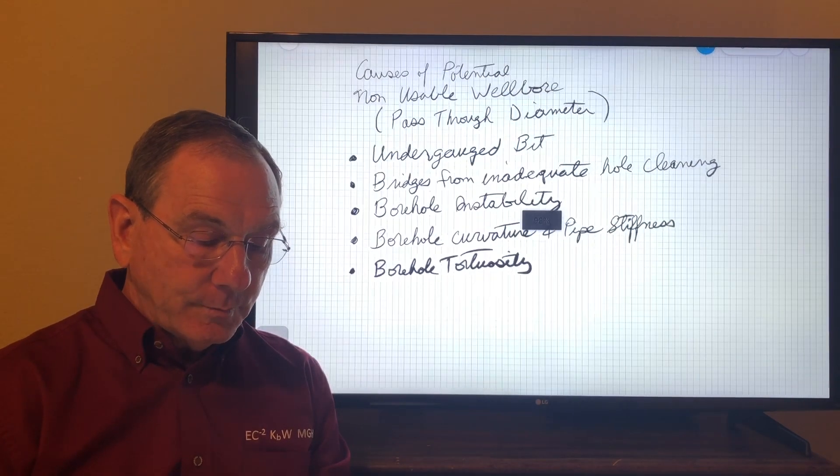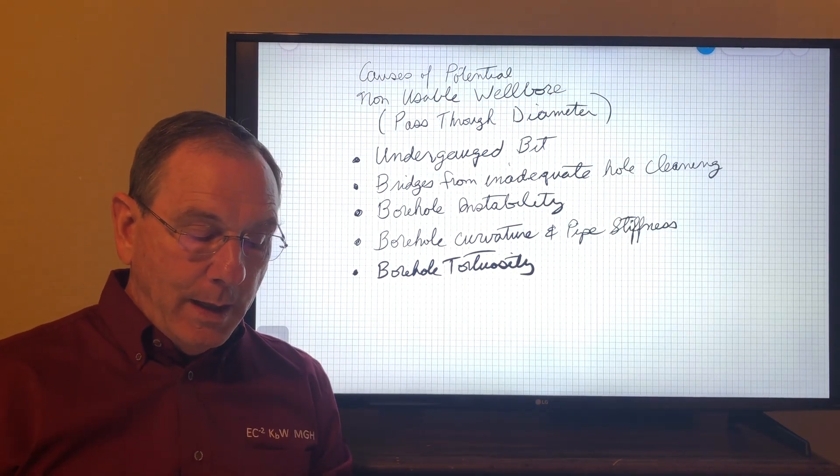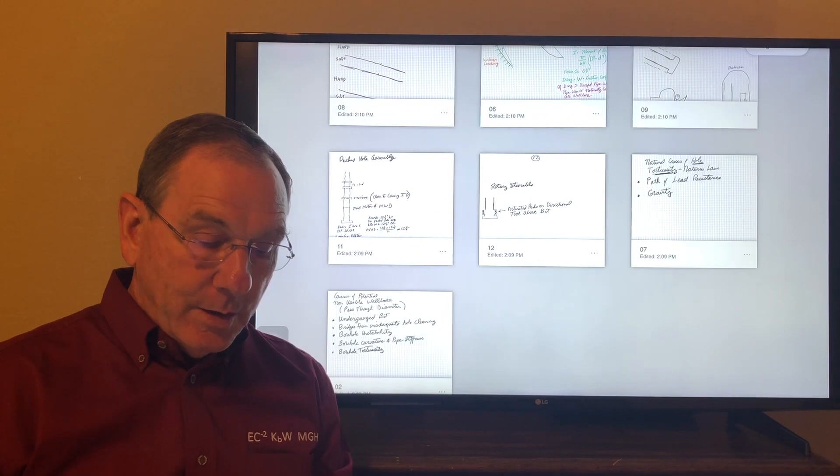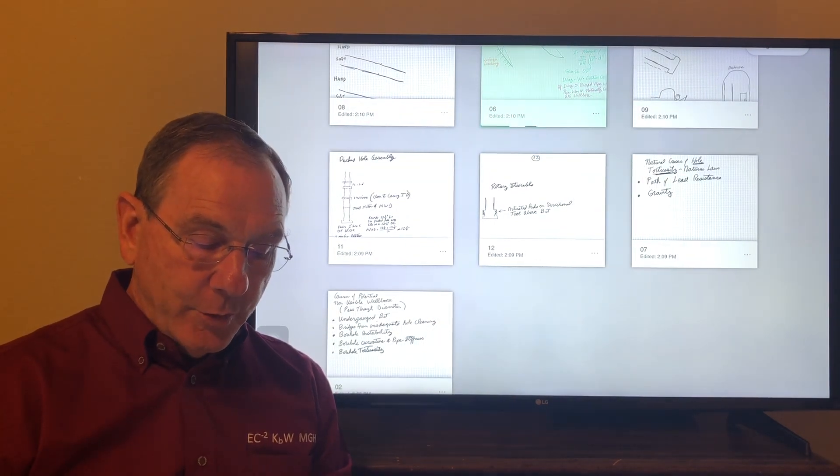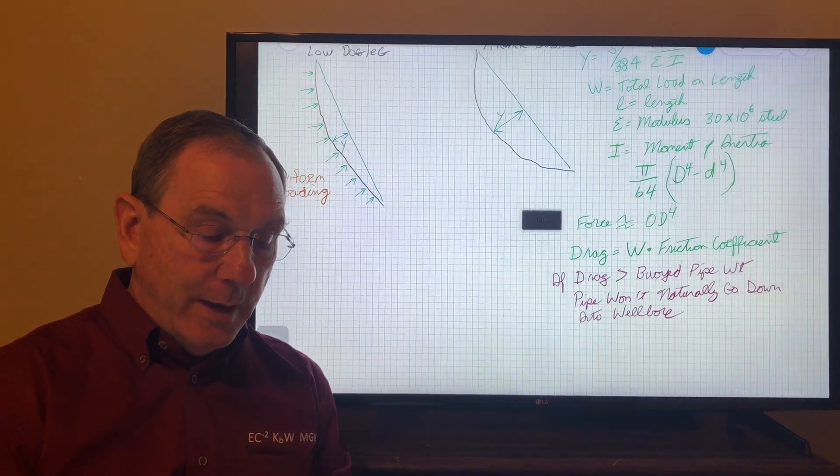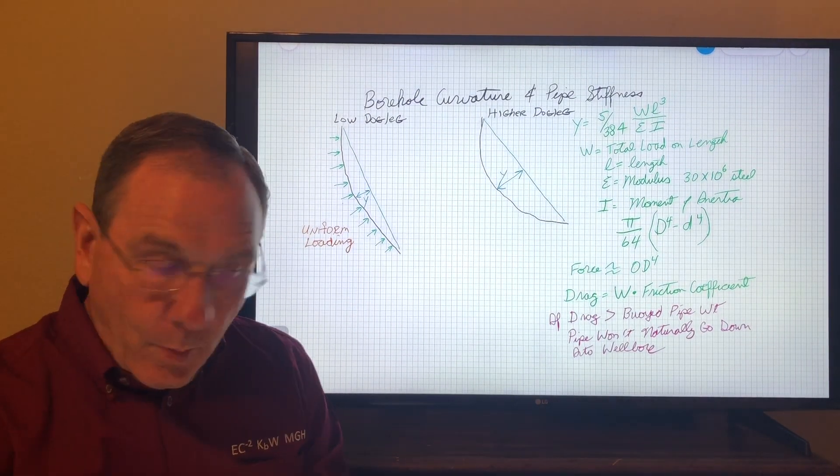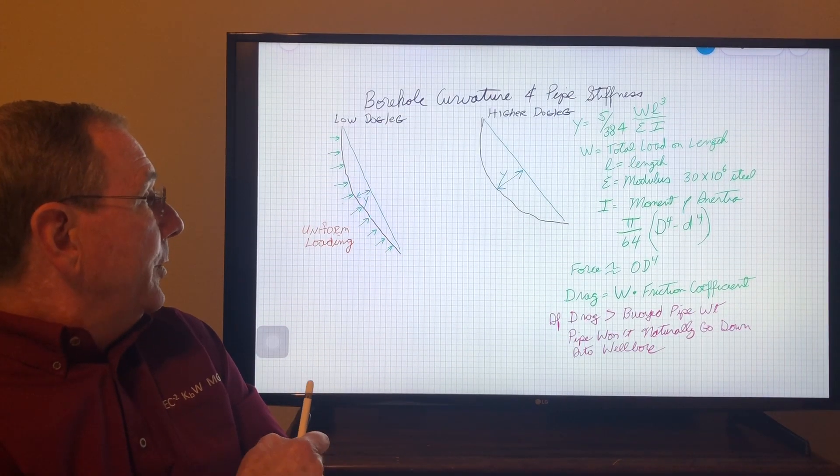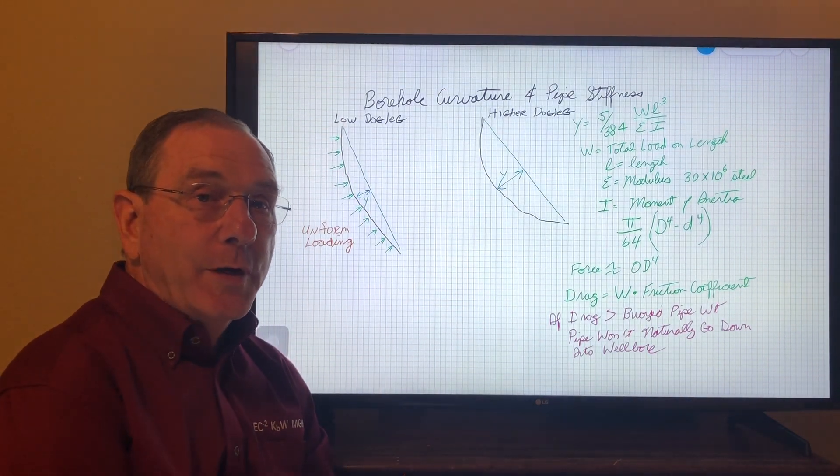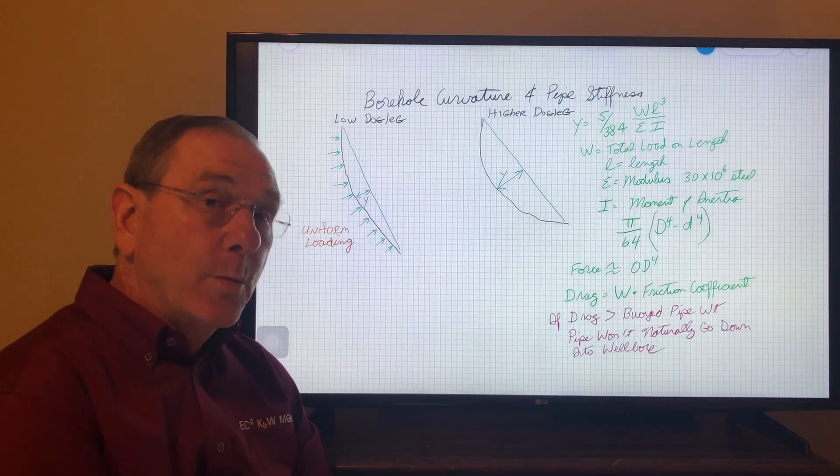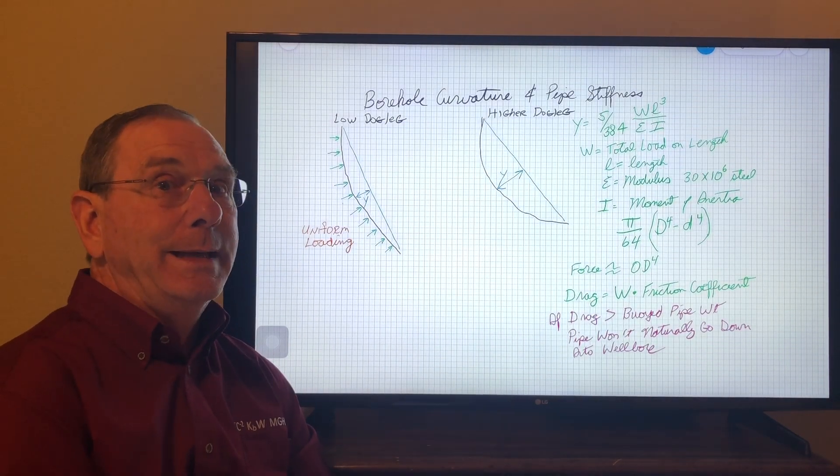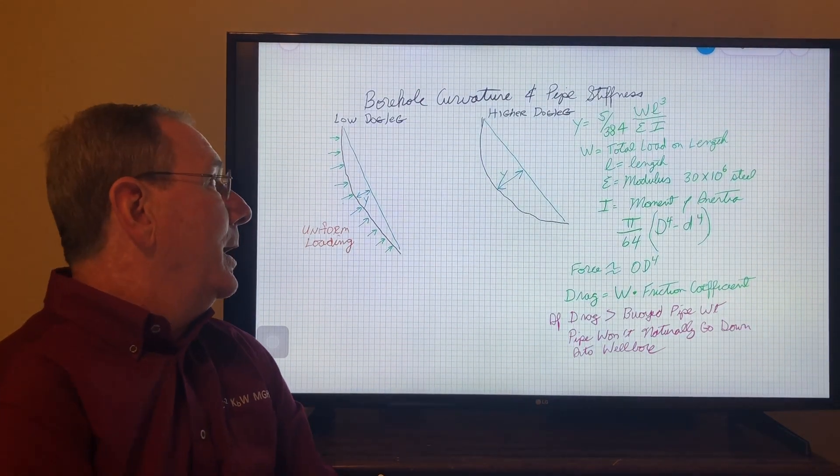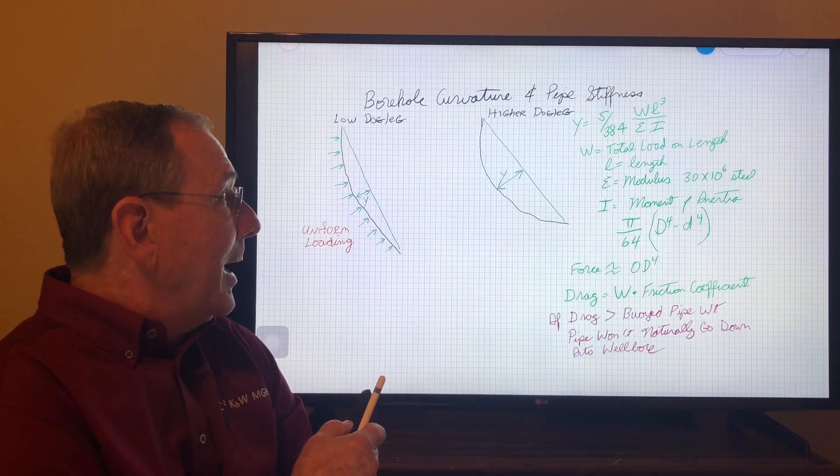Another possible case causing a non-usable wellbore could be borehole curvature and the pipe stiffness itself. Here's a drawing to illustrate this condition. You could have two different wellbores where the wellbore on the left has a low dog leg rate, and this black line represents the curvature of the wellbore. It also equals the curvature of the drill pipe or casing or anything else run in that wellbore—it's going to have to take on the shape of the borehole. On the right we have a higher dog leg, and this might be the curvature of that wellbore with a higher dog leg.